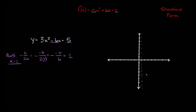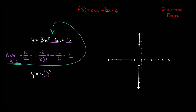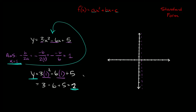The axis of symmetry always runs through the vertex, so the vertex is somewhere on that line. To find where the vertex is, plug x equals 1 into your equation: y equals 3 times 1 squared minus 6 times 1 plus 5. That gives 3 minus 6 plus 5 — 3 minus 6 is negative 3, and negative 3 plus 5 is positive 2. So the vertex is at 1 comma 2.